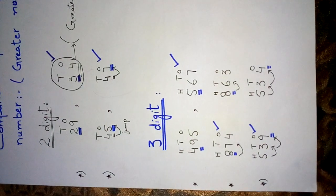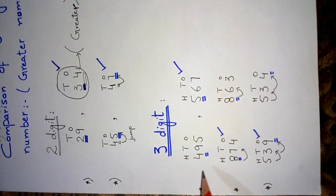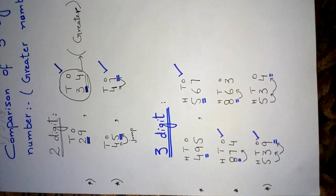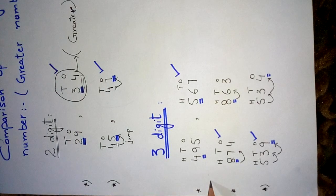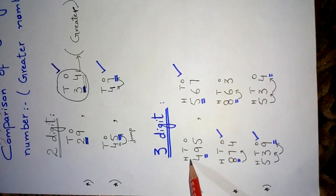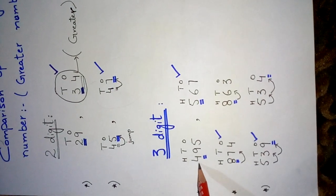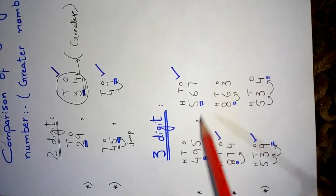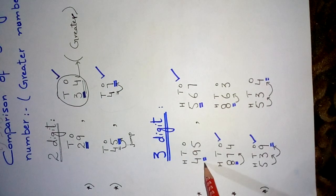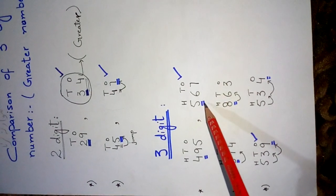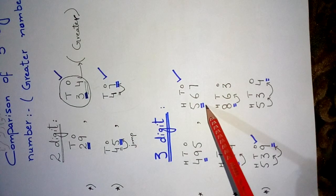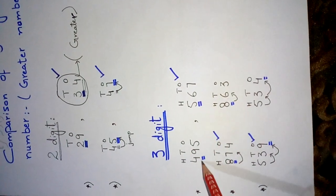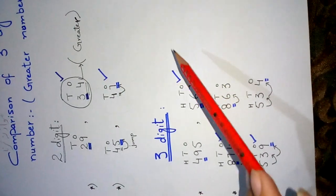Now three-digit comparison. The number is 495 and the next number is 567. Now we will start comparison from the left side, which is the hundreds place value. Here is 4 and this one is 5. We will compare 4 and 5. Which one is greater, 4 or 5? 5 is greater. It means 567 is the greater number in these two. So take the greater number.